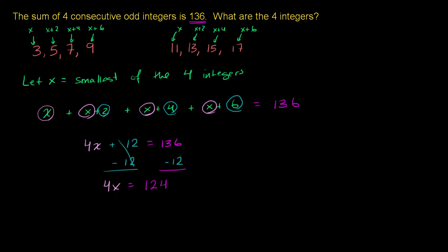Well, we just divide both sides by 4. We can divide both sides by 4 to solve for x, and we get x as being equal to 124 divided by 4. So let's see, 100 divided by 4 is 25, 24 divided by 4 is 6, 25 plus 6 is 31.